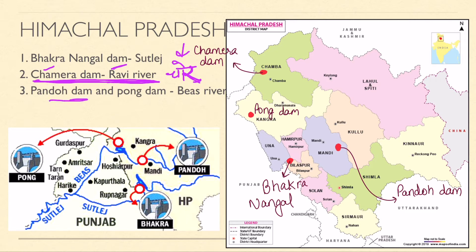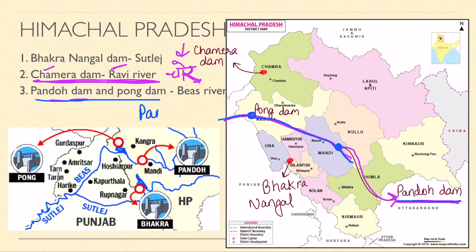Pando Dam is in Mandi district of Himachal Pradesh. Both Pando and Pong dams are on the Beas River. To remember which is where on the Beas: Mandi has Pando and Kangra has Pong. Think of it as 'Ping Pong' - Pan Pong - Mandi and Kangra on the Beas.